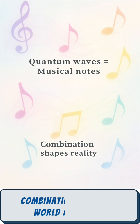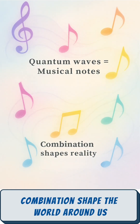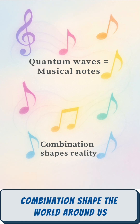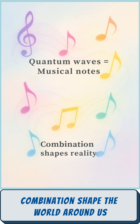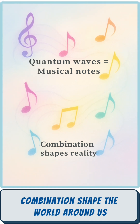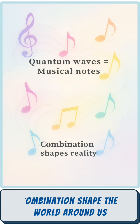Think of musical notes blending together. The Schrödinger equation predicts the combinations of notes and their volume. In the quantum world, it predicts the notes particles play, shaping atoms, molecules, and everything around us.